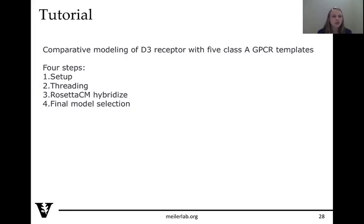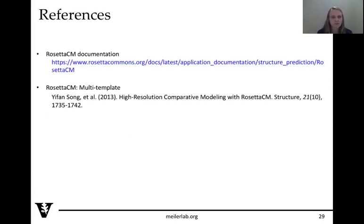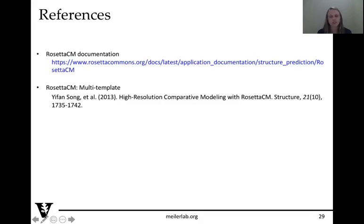In this tutorial, you'll have four steps: setup, threading, running hybridize, and final model selection. Documentation can be found on the Rosetta Commons website, and if you want to read more about this algorithm, there's a paper available. Thank you!